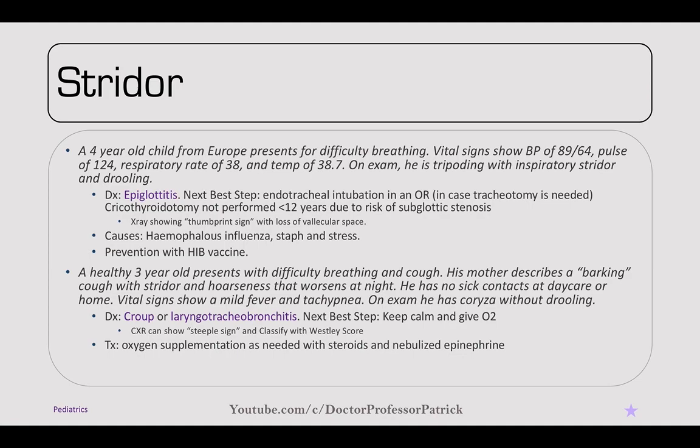A healthy three-year-old presents with a barking cough, stridor, and hoarseness that worsens at night, with no sick contacts. On exam, there's rhinorrhea without drooling. This is croup, or laryngotracheobronchitis. The next best step is to keep calm and give O2. A chest x-ray can show a steeple sign, and classify severity with a Westley score. Treatment is oxygen supplementation with steroids and nebulized epinephrine.